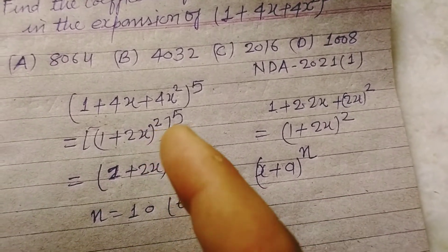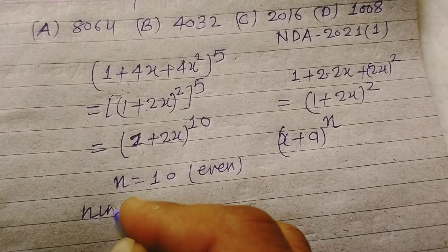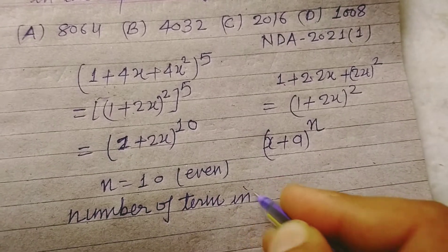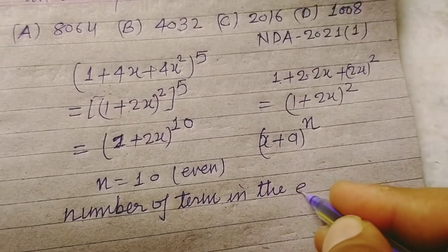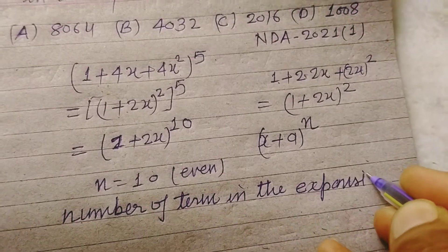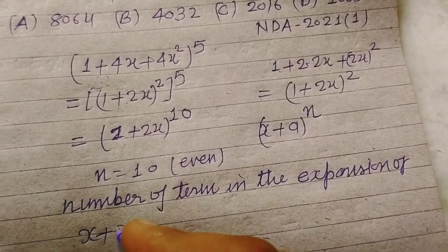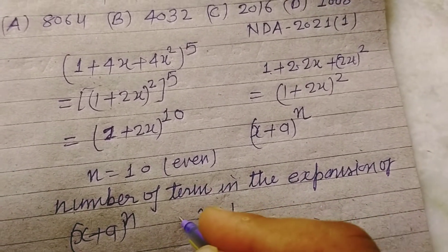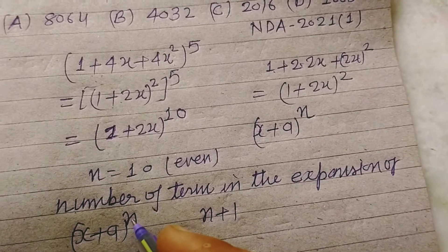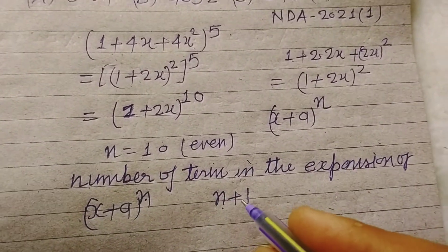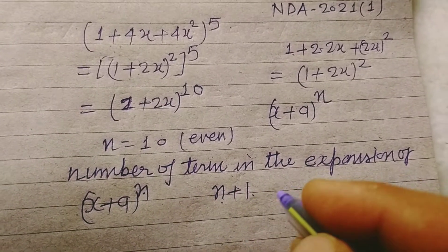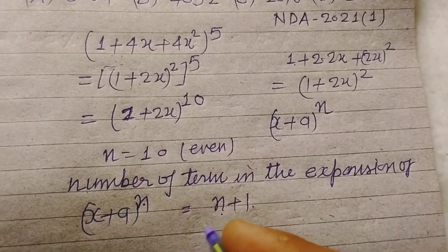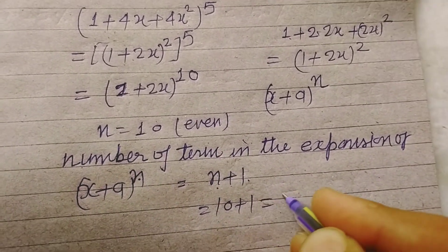So the number of terms in the expansion of x plus a to the power n. How many terms? This is n plus 1. If the power is n, then the number of terms in the expansion of x plus a to the power n is n plus 1. So therefore the number of terms in the expansion when n is 10, so 10 plus 1, these are 11 terms.